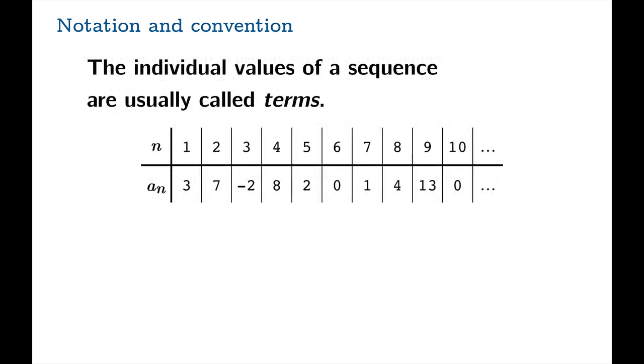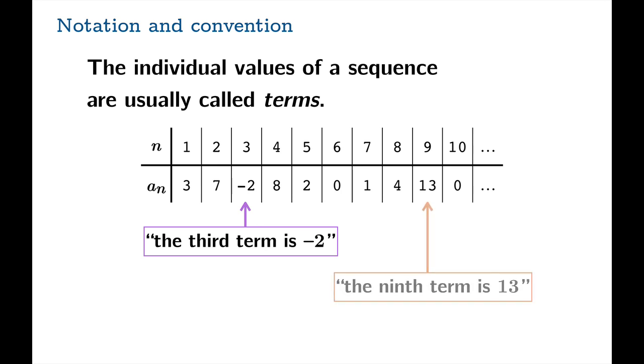Now the individual values of a sequence are called terms, as I mentioned before. So you might say, for example, that here the third term is negative 2, and here the ninth term is 13.